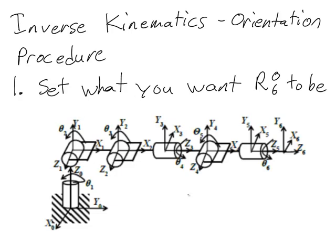Here I've shown a complete kinematic diagram for a six degree of freedom manipulator. I want you to notice that the six frame is not in the same orientation as the zero frame. If we wanted to have the six frame be rotated in such a way that it's in the same orientation as frame zero, then we could set the rotation matrix R06 to be equal to the identity matrix that looks like this.